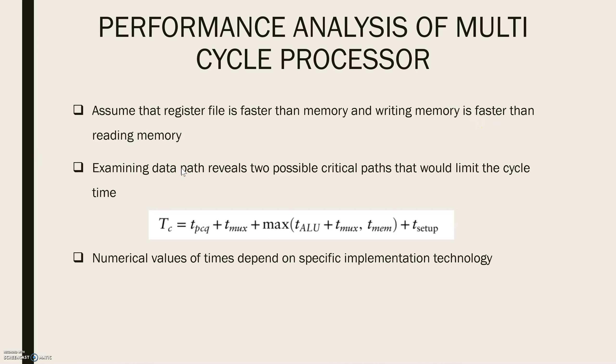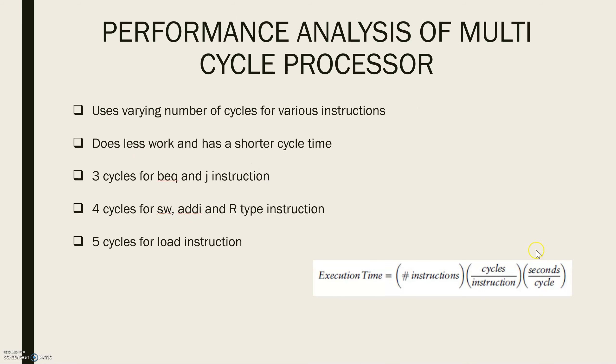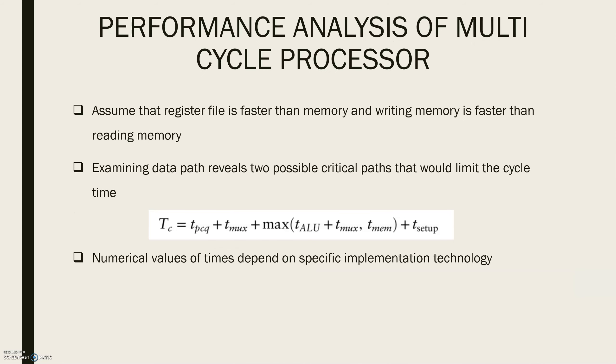Let us assume here that the register file is faster than memory and writing memory is faster than reading memory. In a previous video on the performance analysis of MIPS, we saw that seconds per cycle also known as clock period in the total execution time is determined by the critical path through logic on processor. Now, critical path is the slowest path in the circuit.